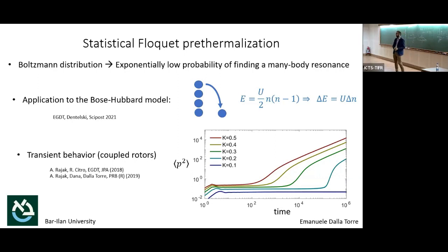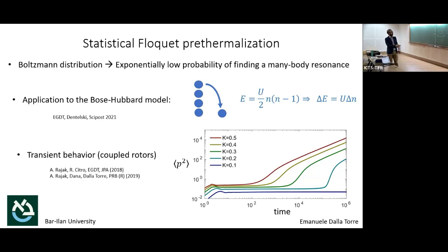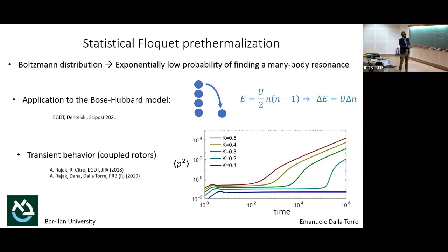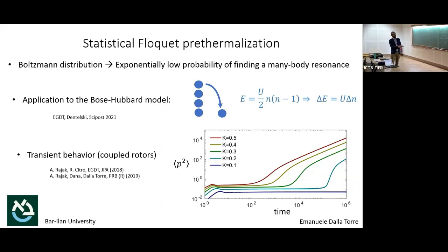The thermodynamic limit is equivalent to repeating many experiments and taking the average energy density. The equation dE/dt is based on the assumption that the pre-thermal state is thermal, and the temperature is set by the energy, which itself changes because of energy absorption. It's quite generic: there is a Boltzmann distribution and you assume the heating rate is proportional to that Boltzmann factor. The energy scale μ is set by the driving frequency and possibly other scales like the system bandwidth.